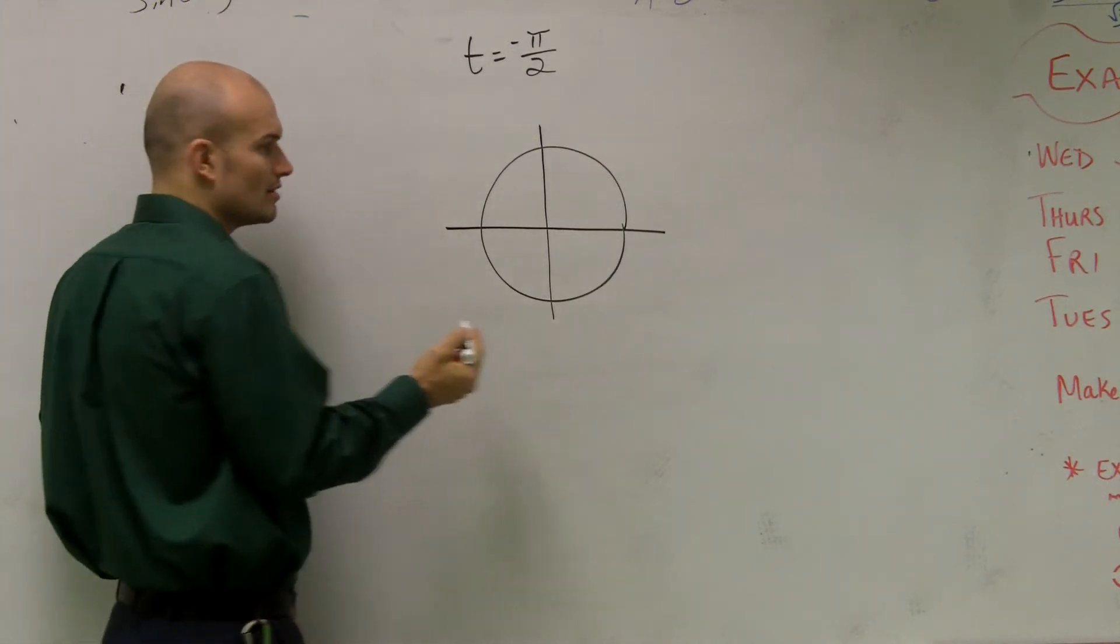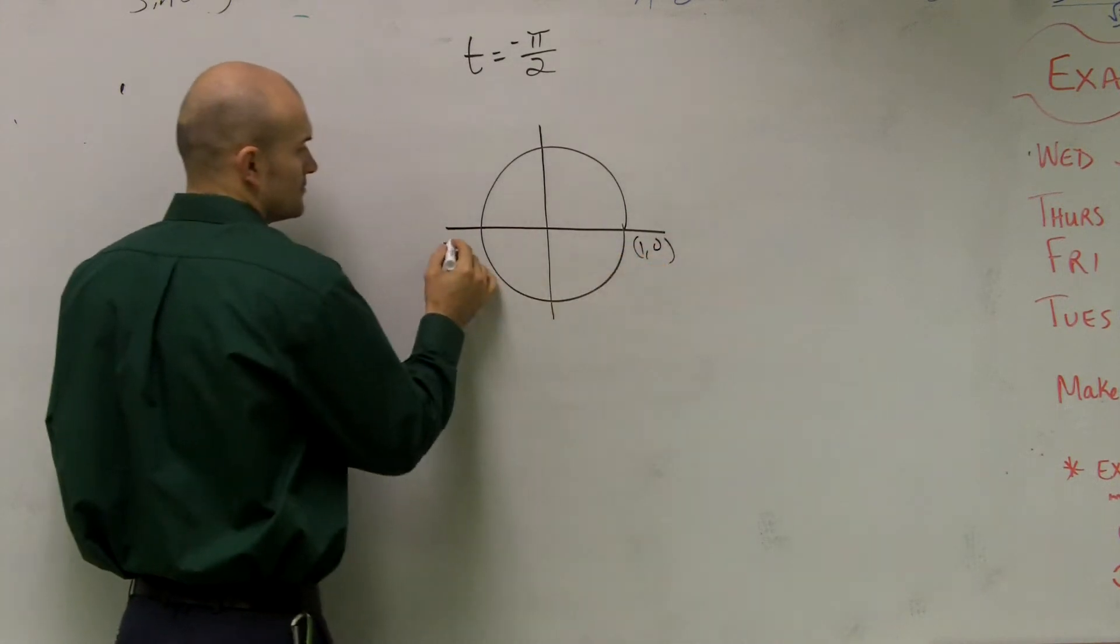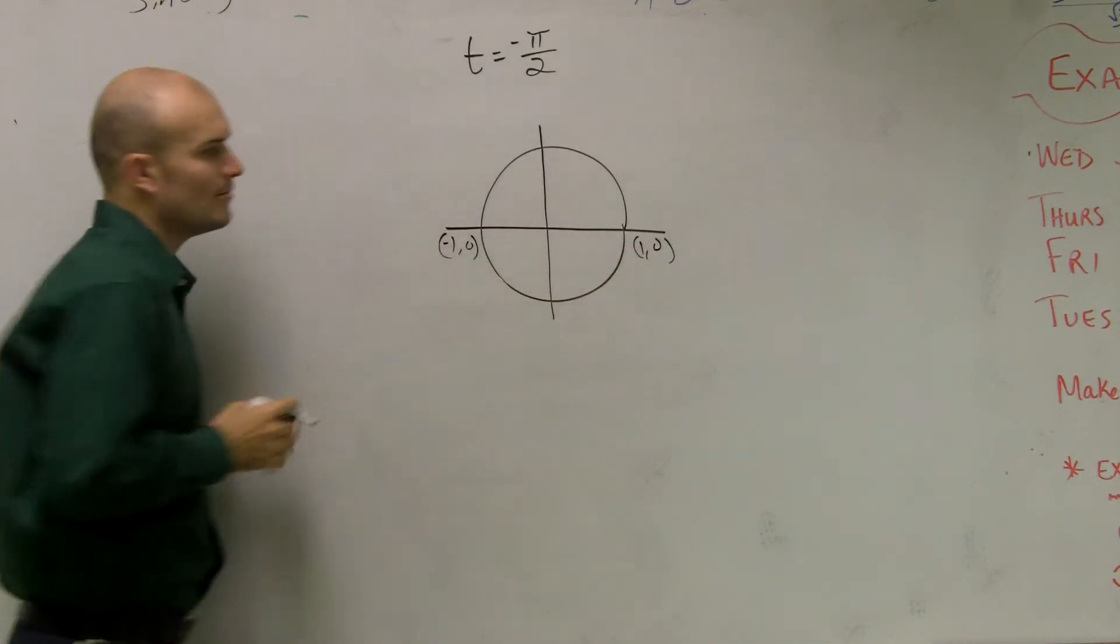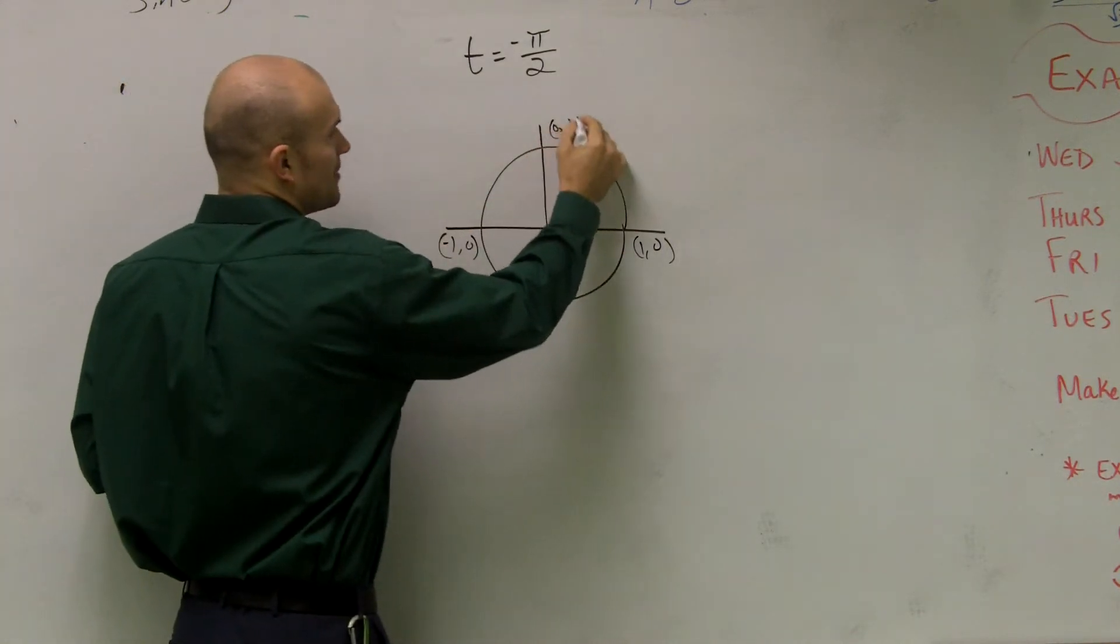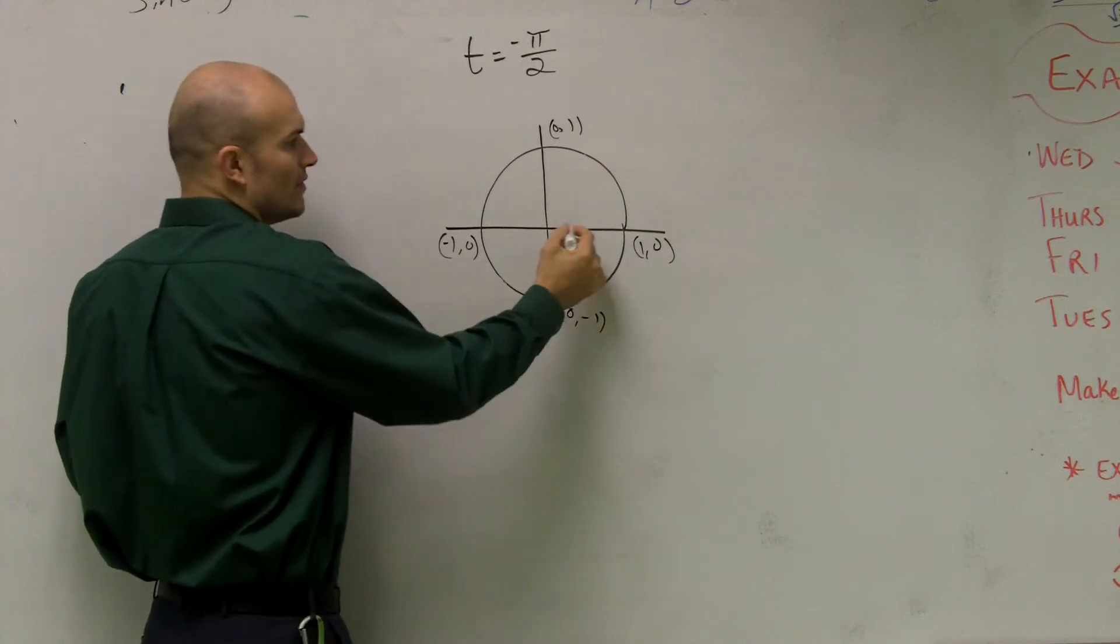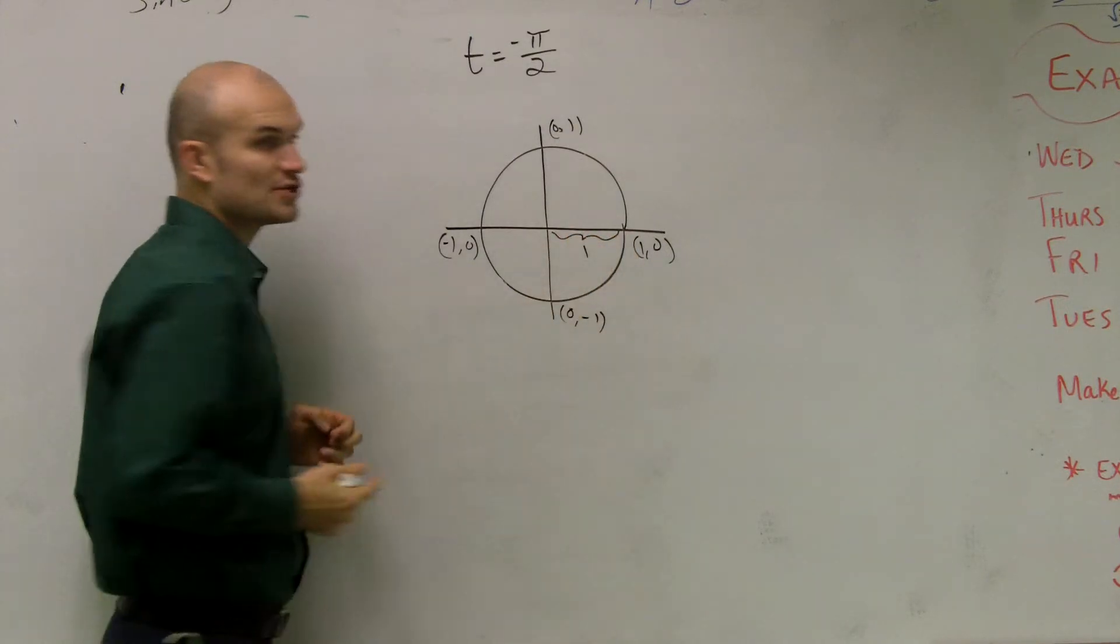Remember our unit circle. Matt, please put your head up. I know it's early. Alright, remember our unit circle crosses at 1, 0, 0, 1, and 0, negative 1, right? And we know that the radius of our unit circle is 1.